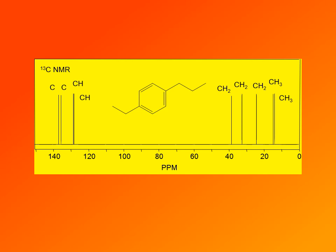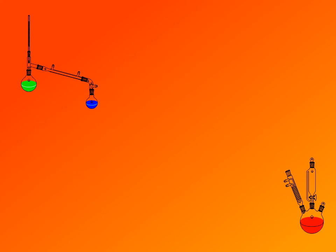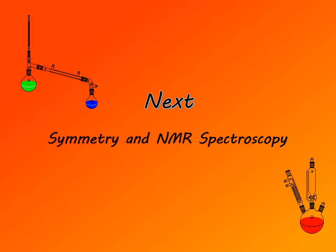Printing all three DEPT spectra takes a lot of space, so in practice we frequently print only the normal carbon-13 NMR spectrum and then indicate the DEPT interpretation next to each signal — for example, CH3 for the first two carbons, then CH2 for the next three, and so on. Aromatic carbons are labeled as either quaternary carbons or CH carbons. This is the more common way to represent results of a DEPT experiment. This completes our study of carbon-13 NMR spectroscopy; next we will look into symmetry and NMR spectroscopy.